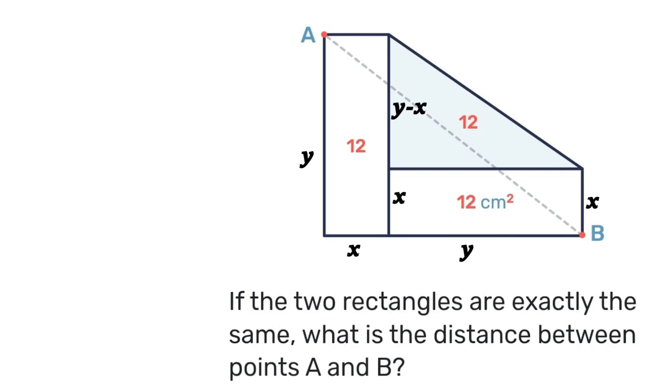Now proceeding, we know that the area of the rectangle is 12 square centimeters and the area of a rectangle in general is length times width. So we can have y times x is equal to 12. Let's hold on to that for a little bit.